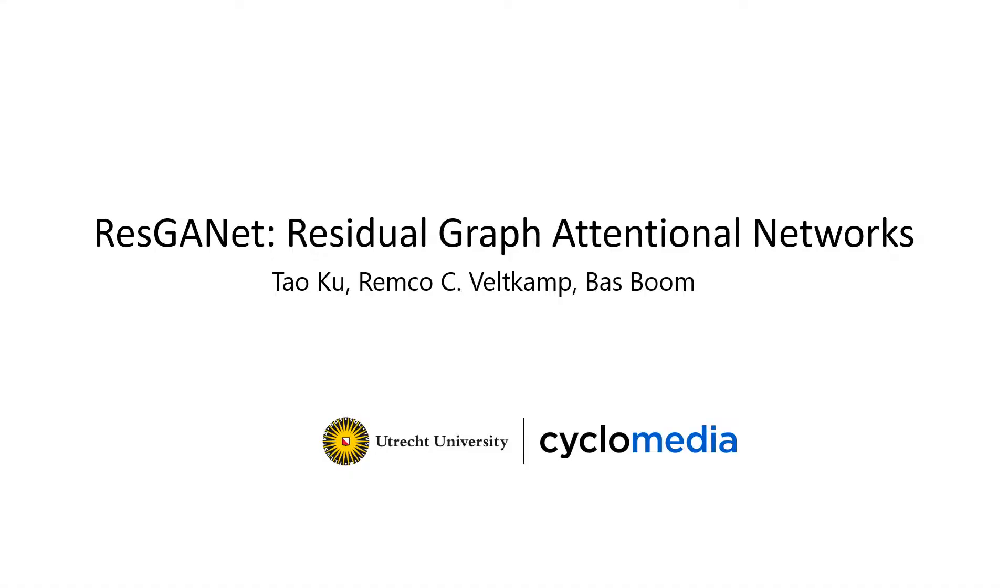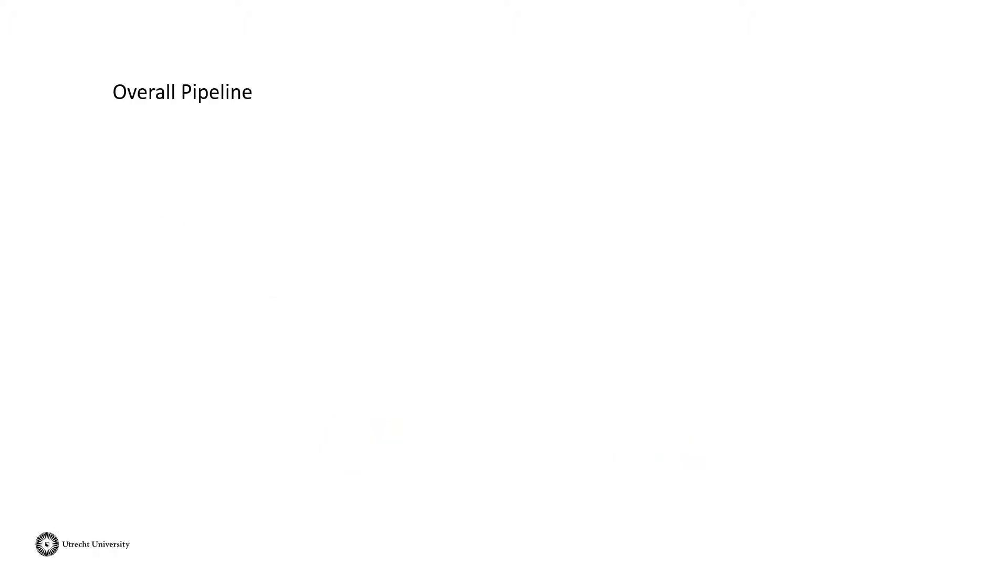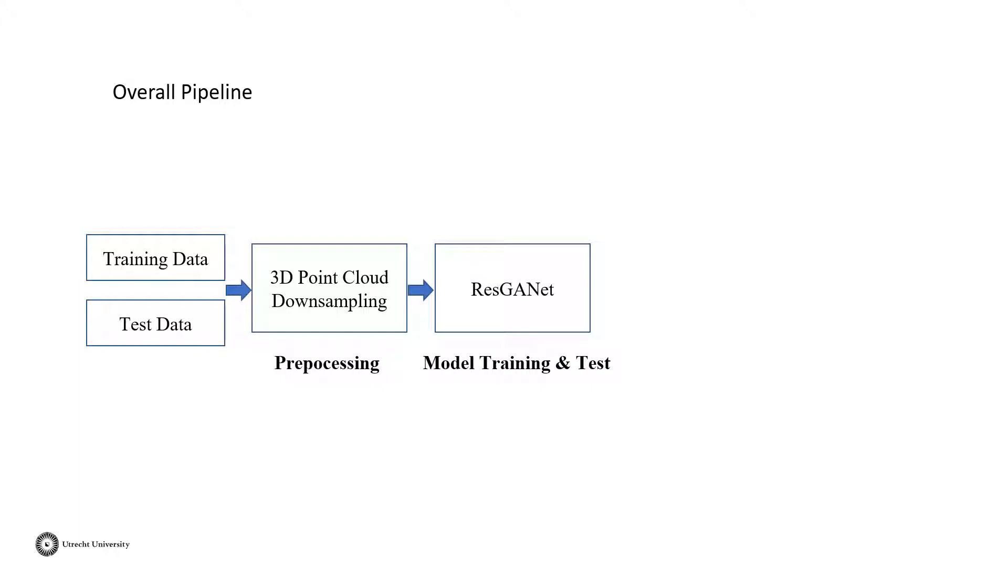We propose a method titled residual graph attentional networks for 3D point cloud semantic segmentation. Considering the large multi-point cloud size, we adopt a three-stage procedure for the 3D point cloud semantic segmentation task. First, we downsample the large 3D point cloud to a fixed number. After that, the proposed ResGCN is used for model training and testing. Then, KNN interpolation is used to interpolate the raw labels of the input point clouds. Finally, the results are used for evaluation.